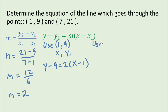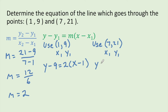Now I want to do the other point as well, (7, 21). I'm going to make this x1 and y1, and the point-slope form for this one is y minus 21 equals 2 times x minus 7. These are done as far as point-slope form for the equation of a line goes.